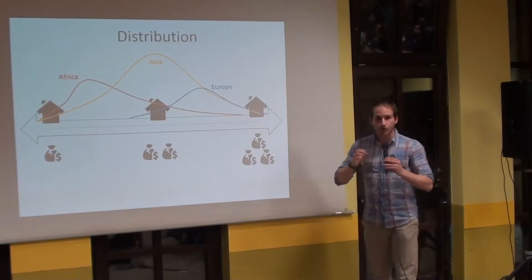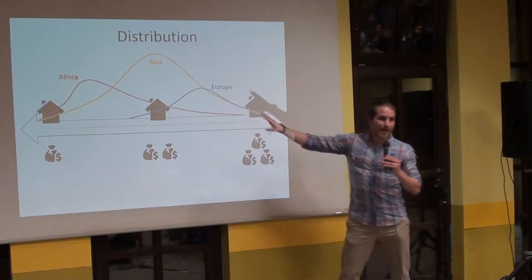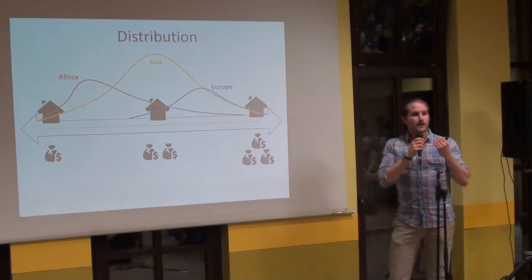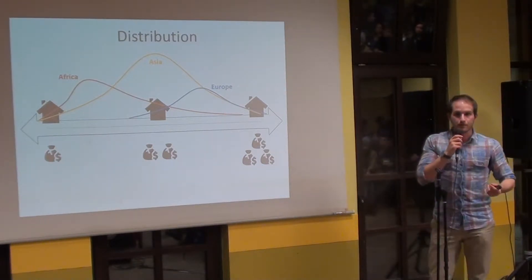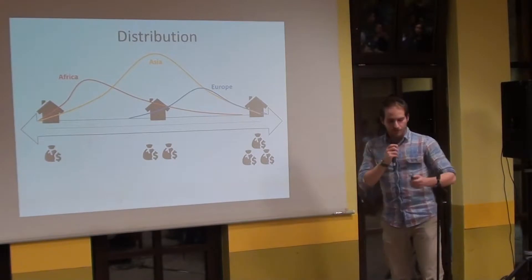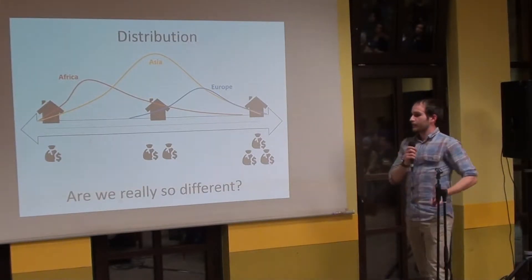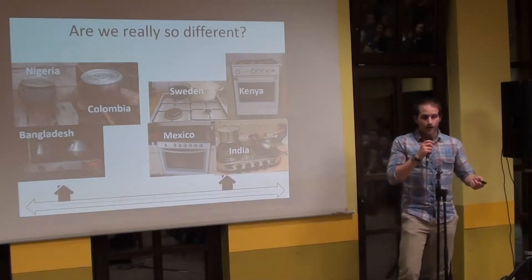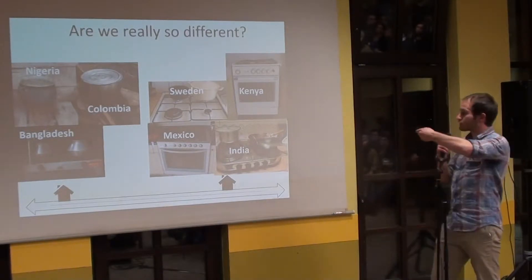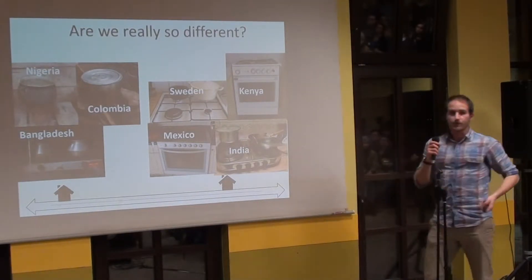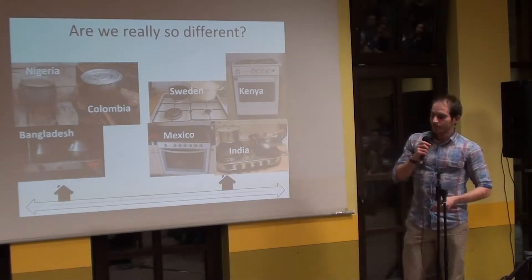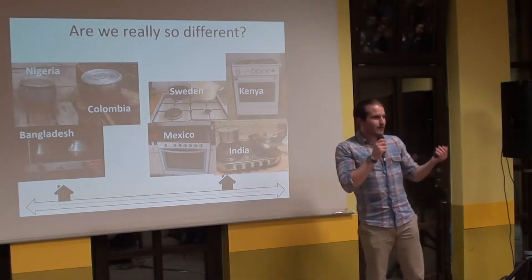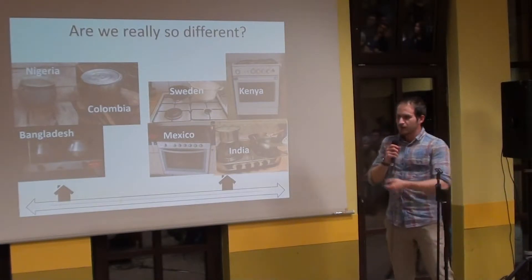What we can do is compare in places where we have a common income level — we can see how these people's bedrooms look, how their stoves look, and so on. We want to wonder if we are really so different. These are stoves. We cook every day, and I want to show you how the stove looks in Kenya, Sweden, Mexico, and India. As you can see, for the richer part of the people, it looks the same way — and for the poorer side, it also looks the same way. There is no change, even though we have different cultures, religions, and countries.